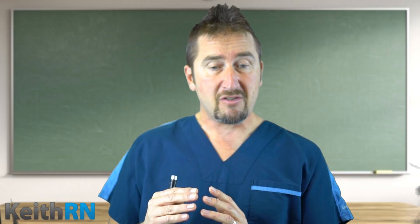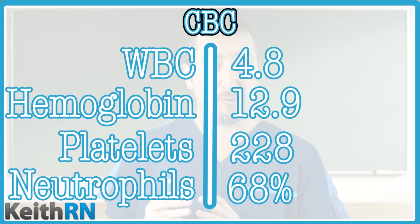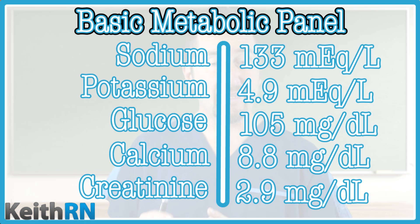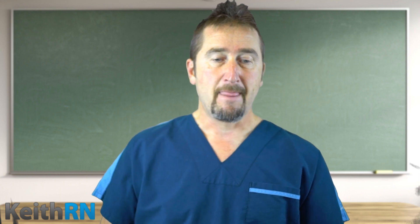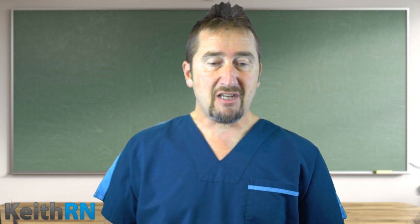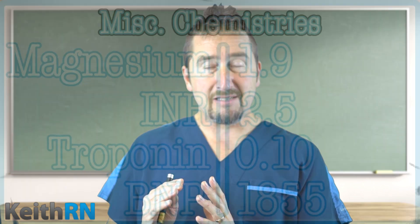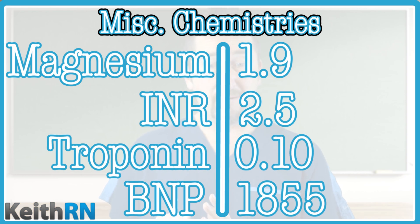She has infiltrates on chest X-ray consistent with pulmonary edema. Labs: white count 4.8, hemoglobin 12.9, platelets 228, neutrophils 68%. Sodium 133, potassium 4.9, glucose 105, calcium 8.8, creatinine 2.9 with a prior trend of 2.2. Magnesium 1.9, INR 2.5. Troponin 0.1 and BNP 1855.